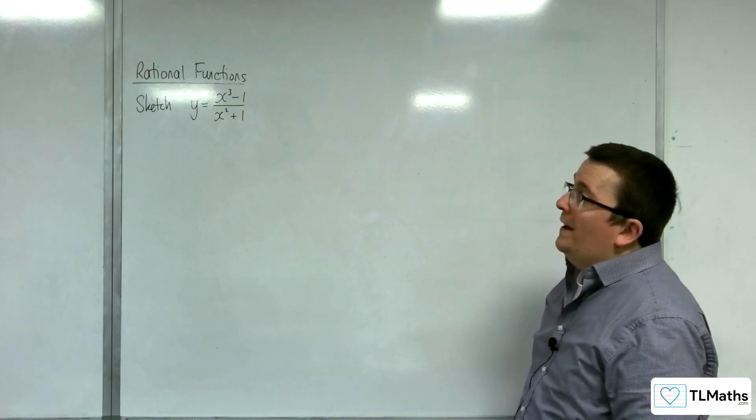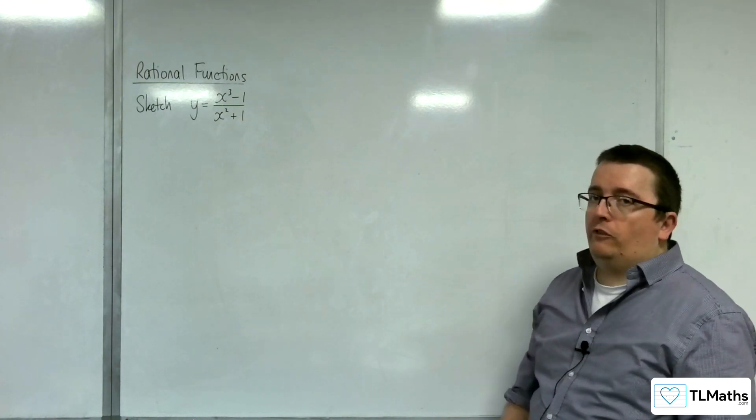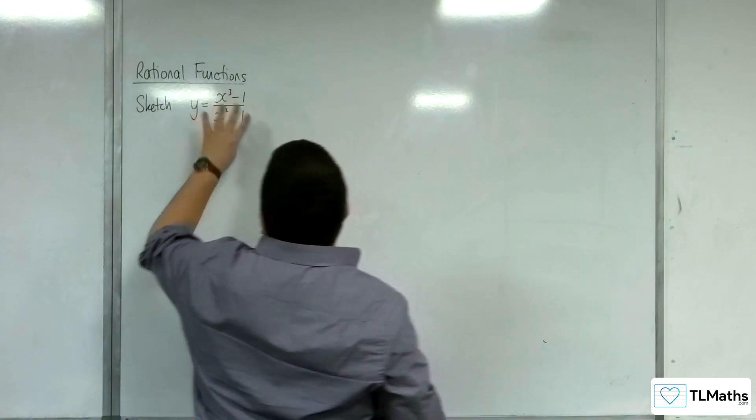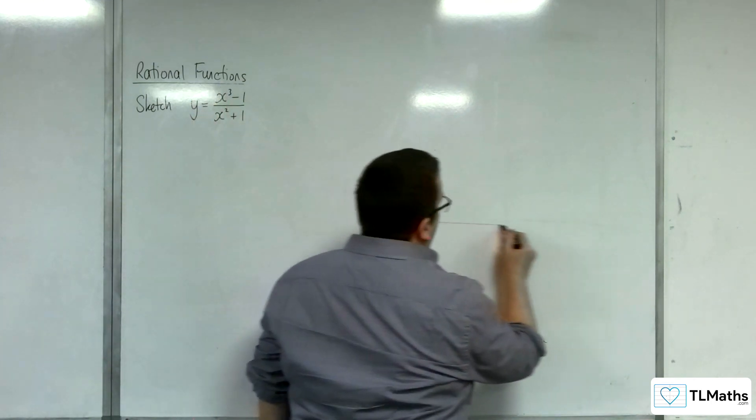In this video we're going to sketch y equals x cubed take away 1 over x squared plus 1. We can't do any factorising to the numerator or denominator, so we'll just leave it alone.